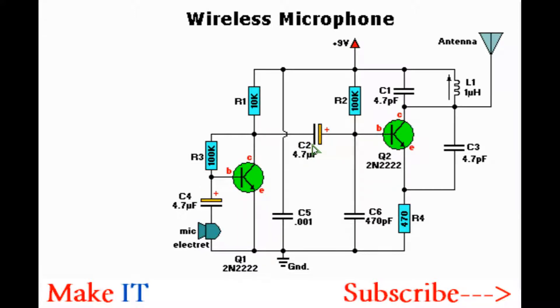Capacitors C4 and C2 ensure that the audio signal gets to the transistors and eliminates the DC voltage from the power supply.